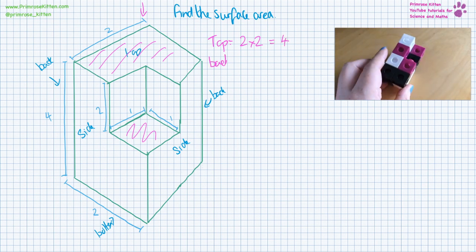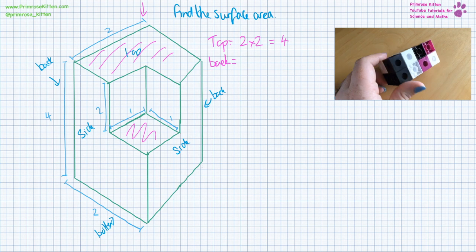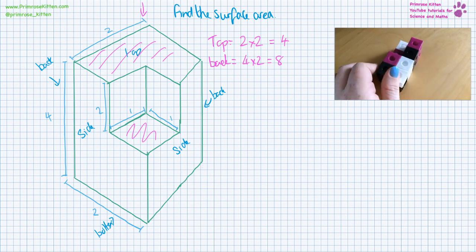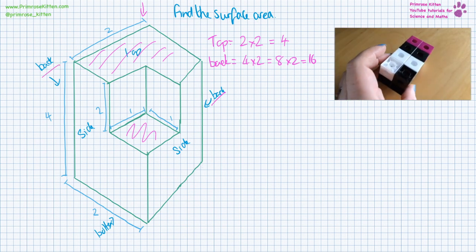If we do the back, from the back what we have is all of this and this. So that is just 4 times 2 which gives us 8. And we actually have 2 backs so that gives us 16. This back here and this back here.